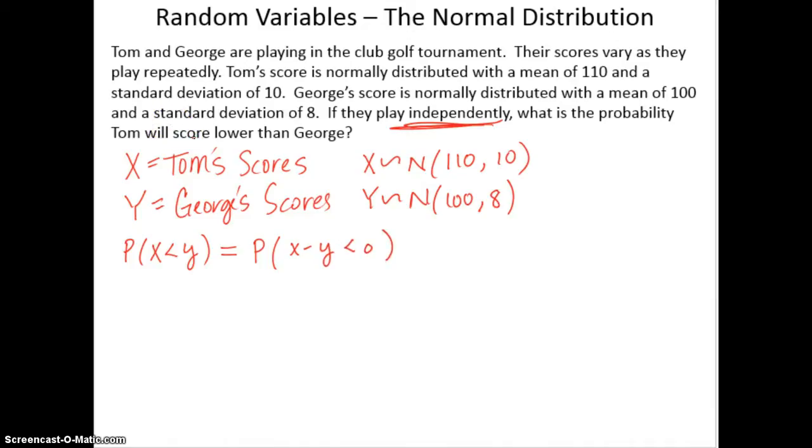Okay, which means that Tom scored lower than George, or George scored higher. So now what we need is information about X minus Y. So we know that X minus Y is going to be approximately normal. We just need the mean and standard deviation. So we're going to use our stuff about combining random variables to do that.